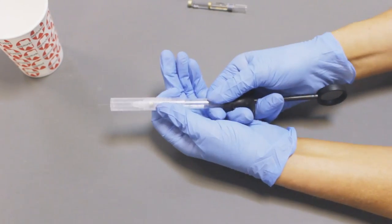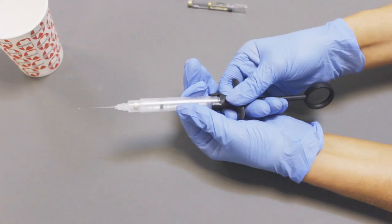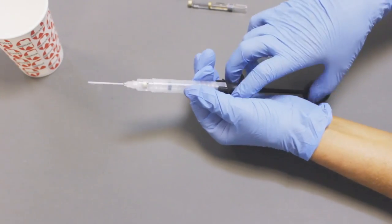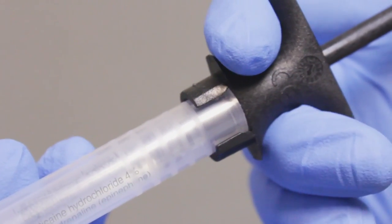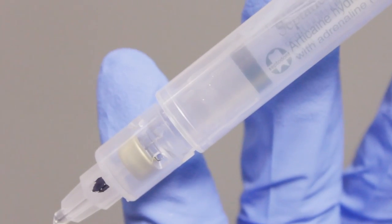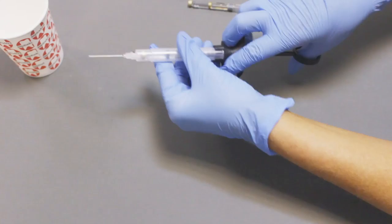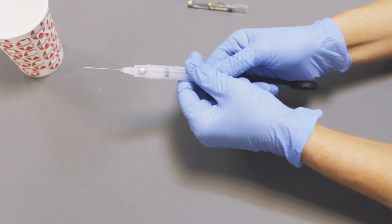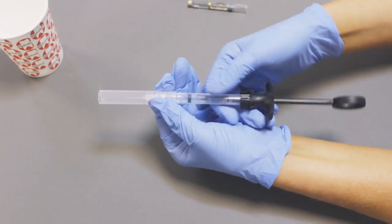A second injection can then be performed by repeating the first stage. When the operator has finished giving the local anesthetic, they may slide the protective sheath into the holding position and then pull one more time until a loud click is heard.